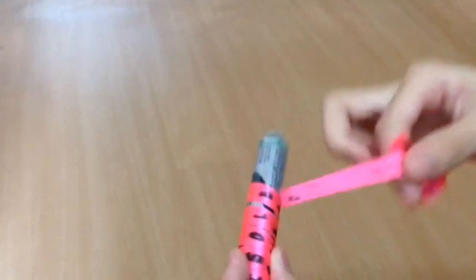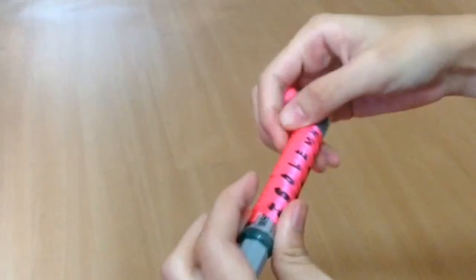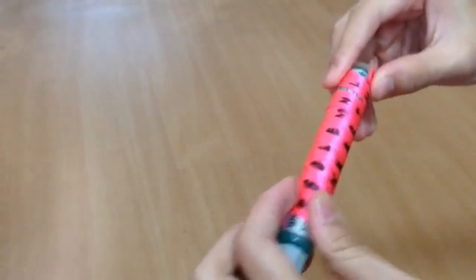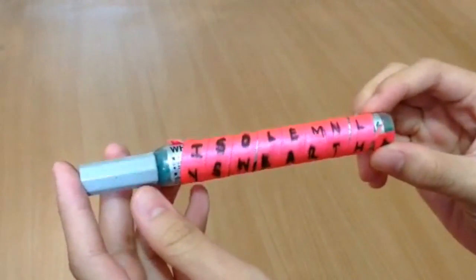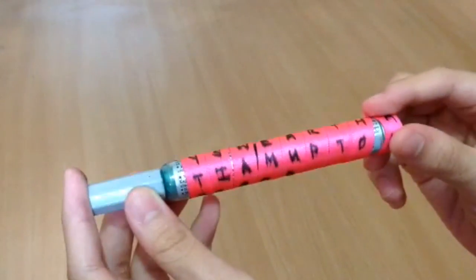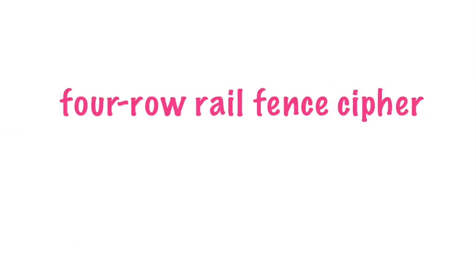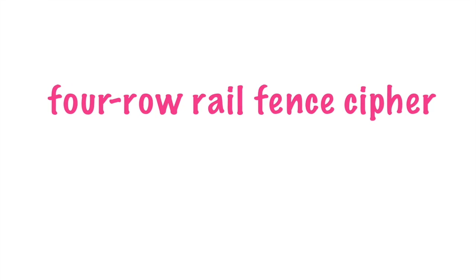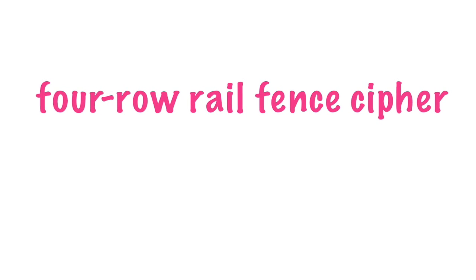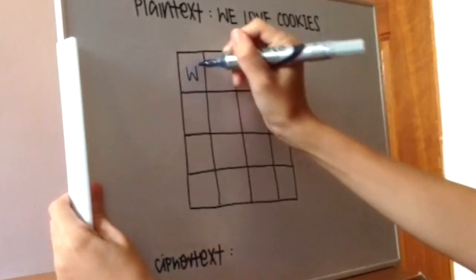For this example, the message says, "I solemnly swear that I am up to no good." After the use of the SkyTally, the 4-row rail fence cipher encryption algorithm was developed. Similar to the diameter of the cylinder in the SkyTally machine, the number of rows of the rail fence cipher encryption is the key used for encrypting and decrypting the secret message.